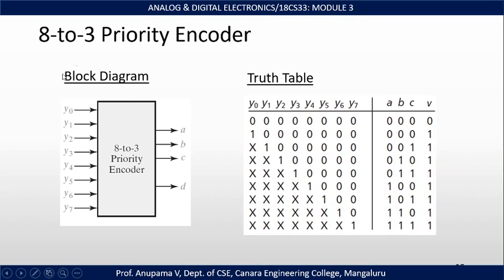This is the block diagram of the 8-to-3 priority encoder. It has 8 inputs: Y0, Y1, Y2, Y3, Y4, Y5, Y6, and Y7. It has 4 outputs: A, B, C, and a fourth output called V, the valid output indicator.